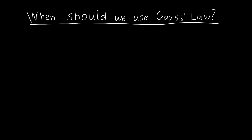In this video we're going to answer the question: when should we use Gauss's law? Gauss's law says that the electric flux, written as Φ_E, is equal to the enclosed charge inside a Gaussian surface divided by epsilon naught. If we're inside some material with a different permittivity, then this will change.